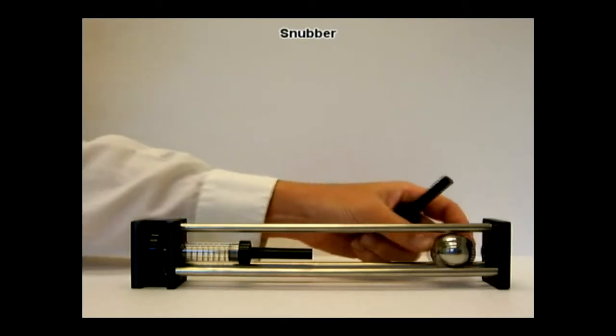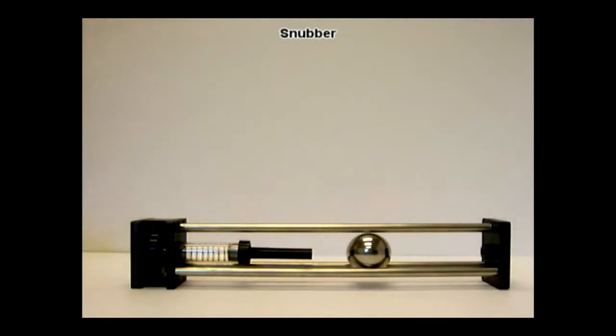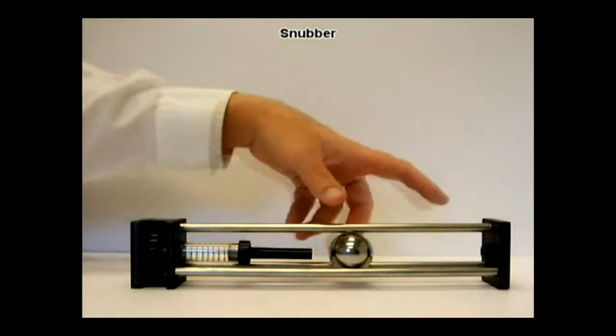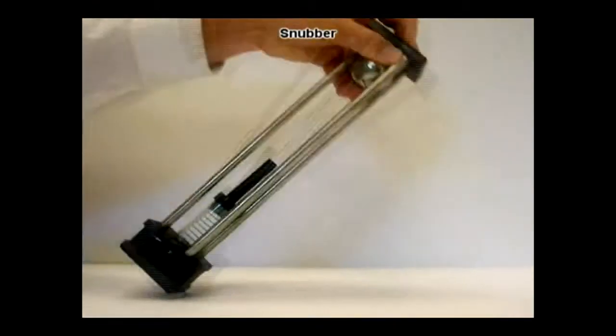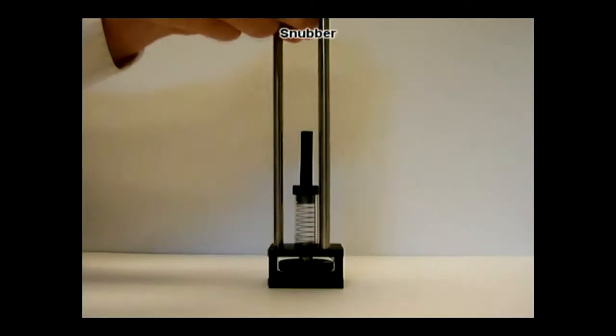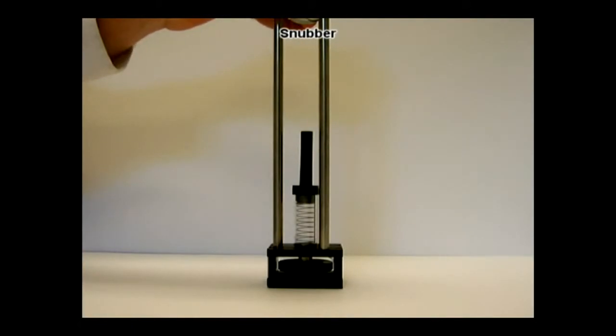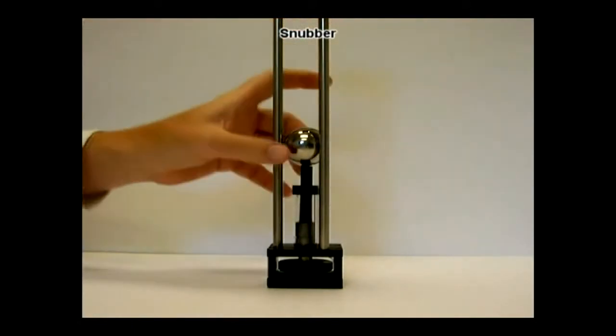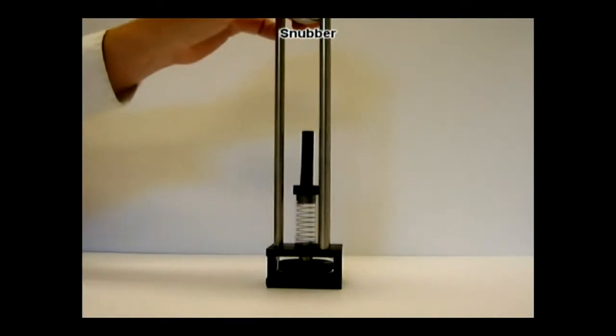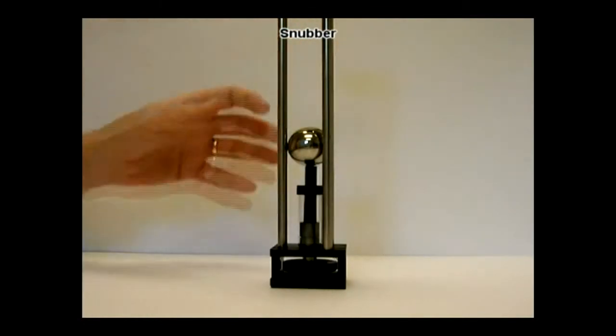This steel ball here is going to fall by gravity and hit the snubber rod. So let's give it a try. I'm just going to drop the ball, let it fall by gravity, and you can see it lands very softly.